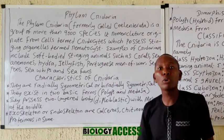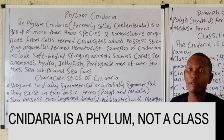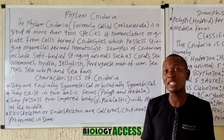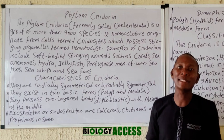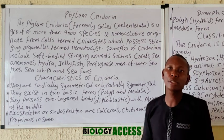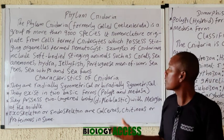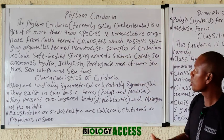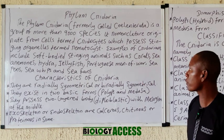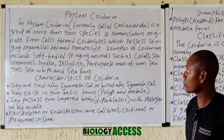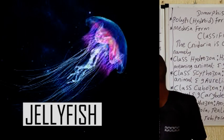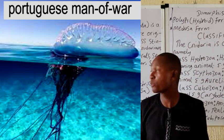The phylum Cnidaria comprises more than nine thousand species of invertebrates. Their name is actually derived from the nida or nematocyst, which is produced by nidocytes — cells that produce this stinging organelle. The nematocyst, as we know it, gives these organisms two body forms. Examples of the Cnidarians include the hydra, which is the most common example, jellyfish, Portuguese man-of-war, and others displayed on the board.